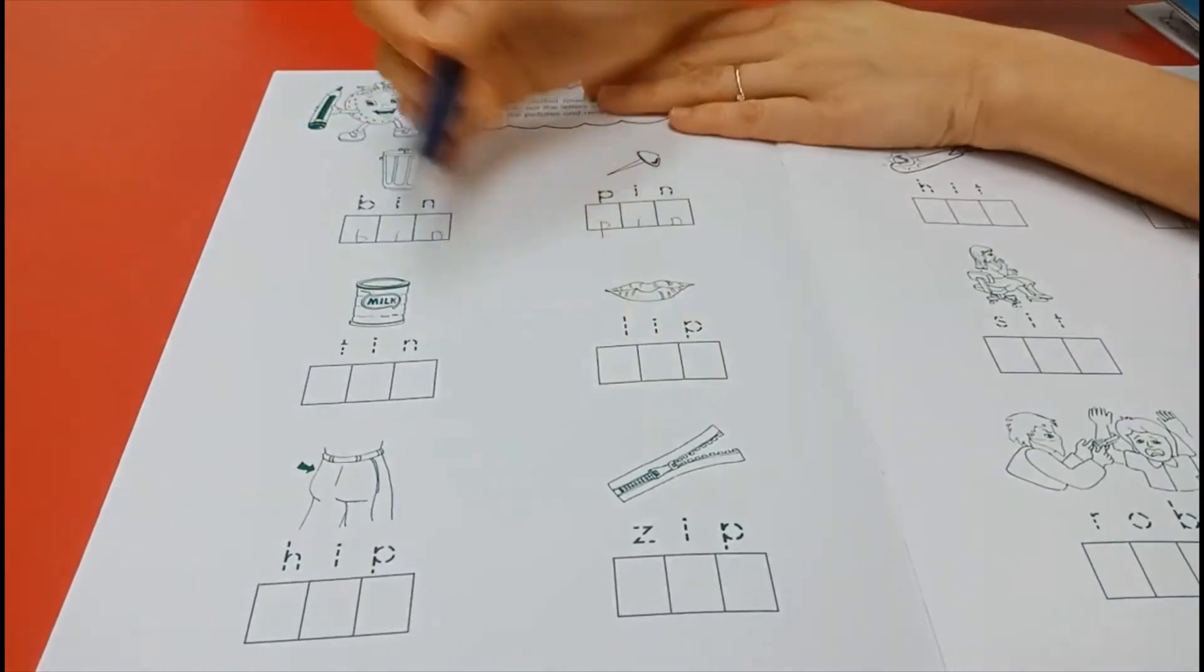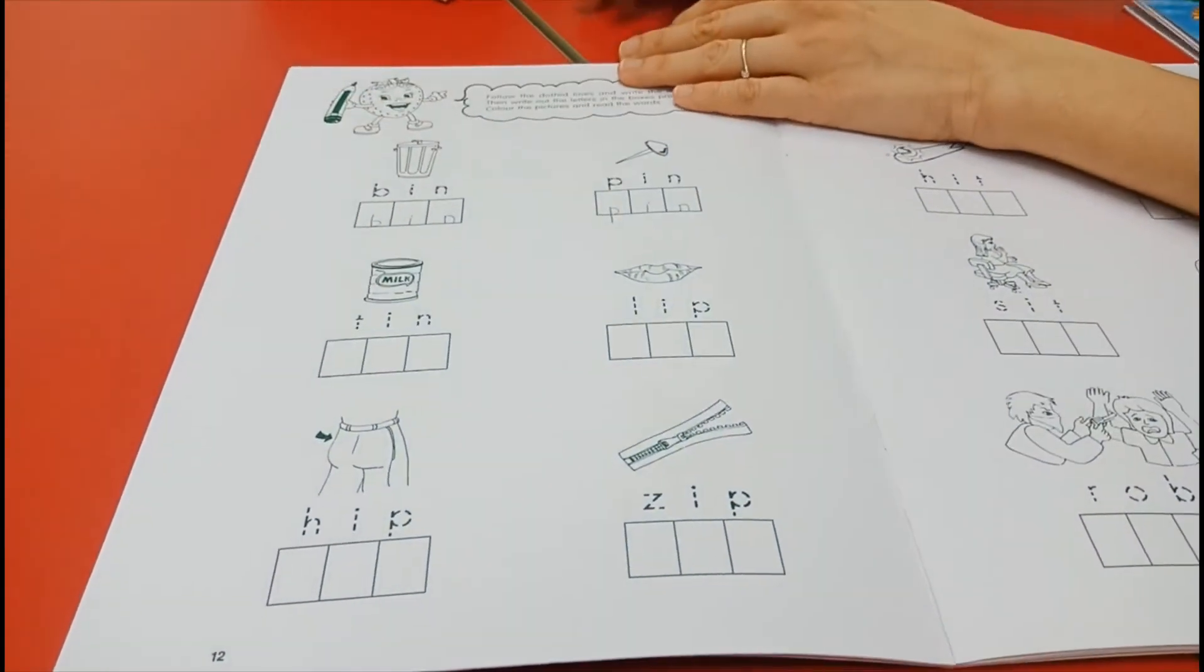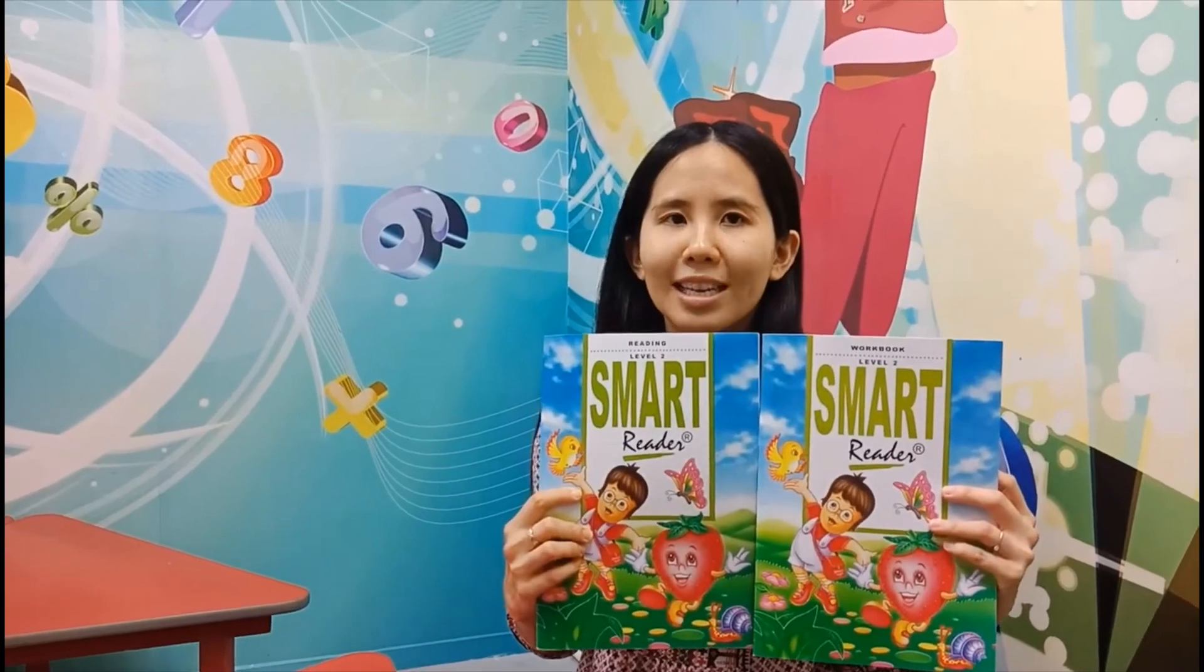So you write everything beautifully and then you colour beautifully for Miss Hau. Okay, so that's all for today. Today we learnt two books already. Okay, see you next week, bye!